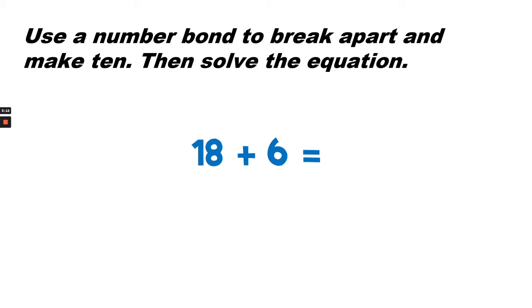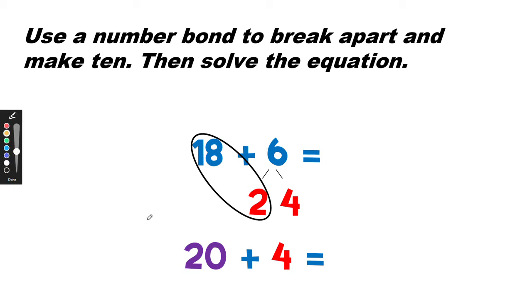How can we make 10? Here's one way. We can break apart the 6 into 2 plus 4 and add the 2 to 18. The 20 is a multiple of 10. So this 20 is the sum of 18 plus 2.